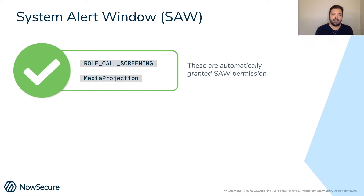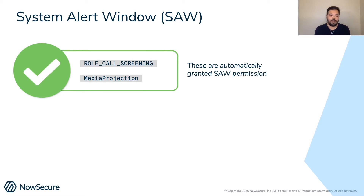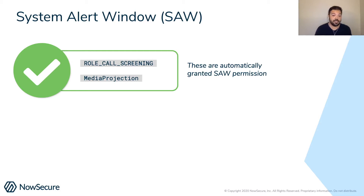Basically, what Android 11 has done is it's really changed how applications can access that overlay permission or access overlay. Over the years that has been changed a bit, but now it's really been structured down to only a few types of apps that can really access system overlay. So like a call screening app where you have an application that has a little bubble while you're calling and it's on your screen, or media projection where you're displaying what's on your screen — those are applications that might access those types of permissions.